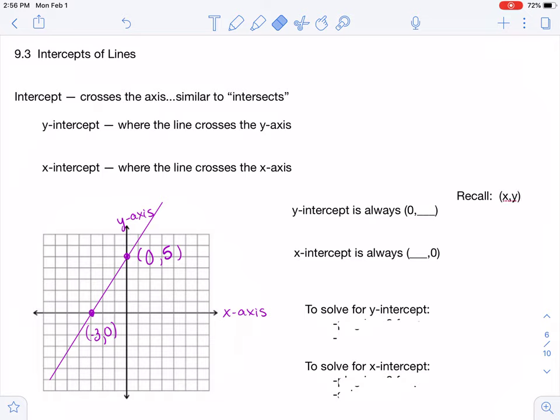Recall it goes (x, y). So the y-intercept is where x is 0, and the x-intercept is where y is 0. To solve for the y-intercept, you plug in a 0 for x and solve. To solve for the x-intercept, you plug in a 0 for y and solve.